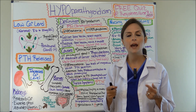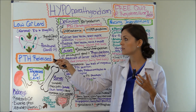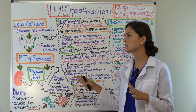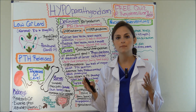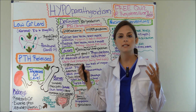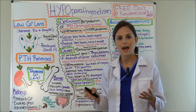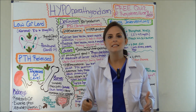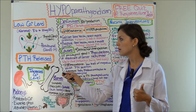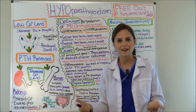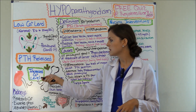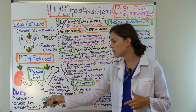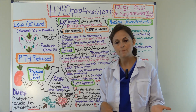Your parathyroid is located in your neck behind your thyroid gland — the little pink area is your thyroid gland, and the green areas are your parathyroid; you have four of those. How this whole system works is it's stimulated by low calcium levels. A normal calcium level is 8.6 to 10 milligrams per deciliter. When your parathyroid senses low calcium — less than 8.6 — it releases parathyroid hormone to get the calcium level back up. PTH acts on the kidneys and the bones to help increase that calcium level. When PTH is released, it causes the kidneys to reabsorb calcium, which increases your calcium levels.